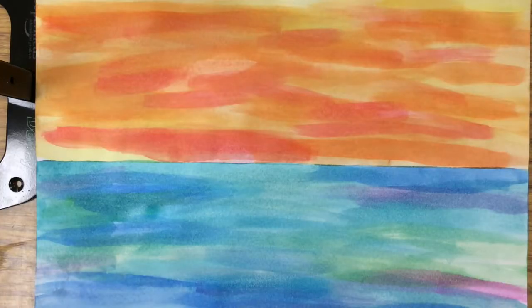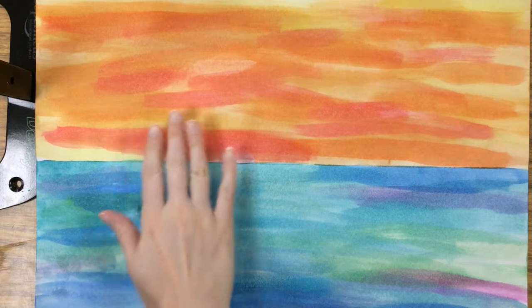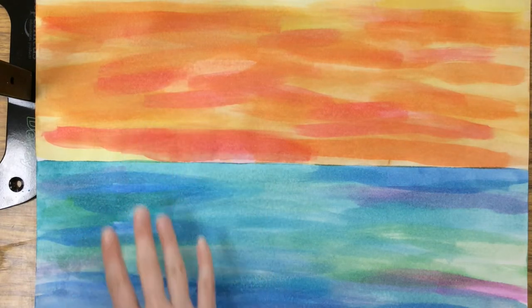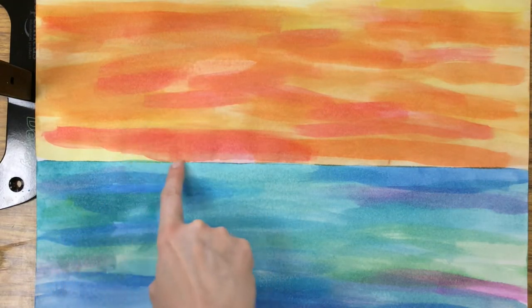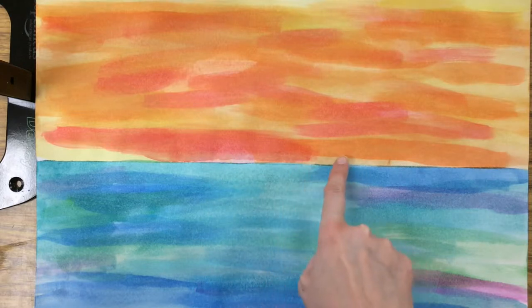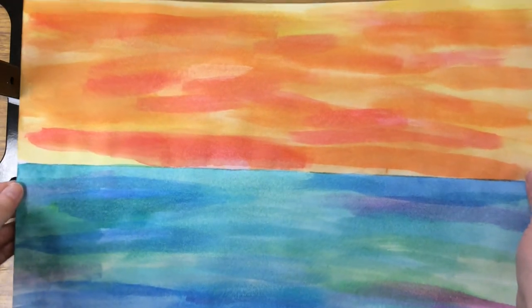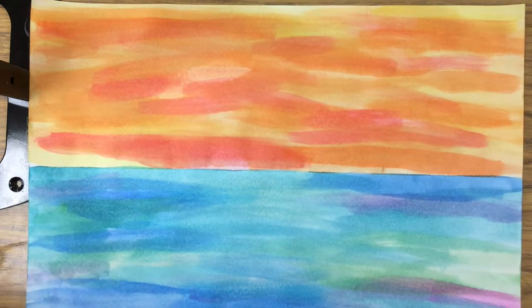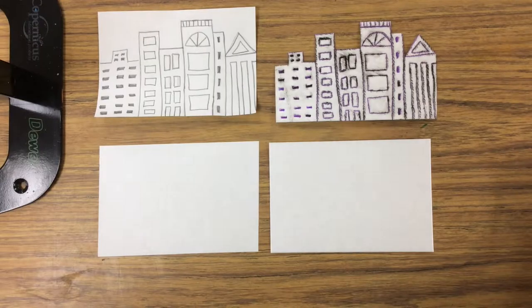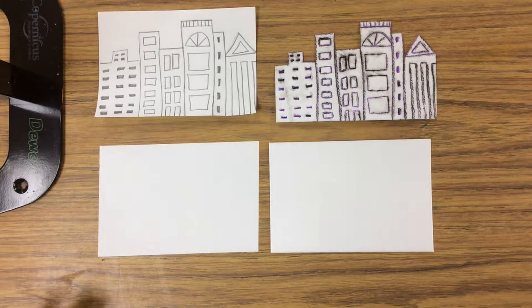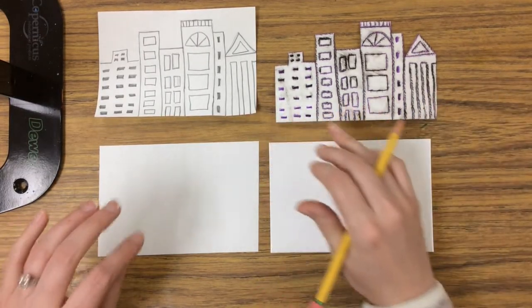Once you've got your warm sky and cool water painted and you've had them meet at the middle line so that there's no white left on the paper, we're going to put this on the drying rack with two hands and move on to working on our city design.